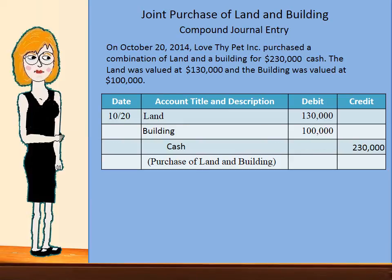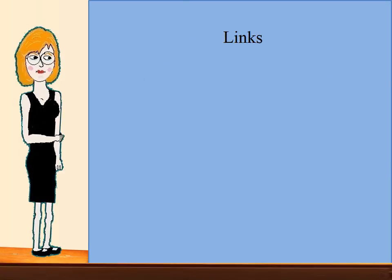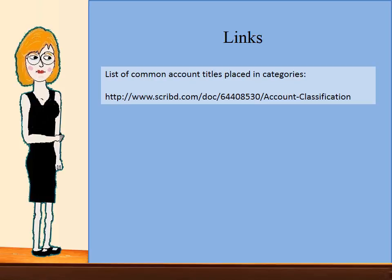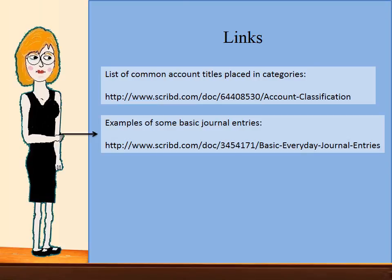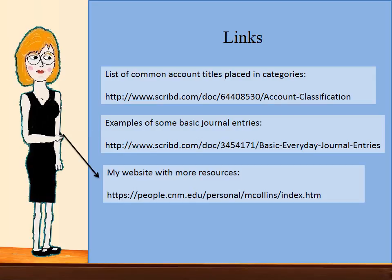This ends our presentation on property, plant, and equipment. Here is a list of common account titles placed in categories; you can look at this anytime you need a refresher. Here is an example of basic journal entries such as the ones we just covered. And here is my website for CNN — only students that go to CNN who have passwords and usernames can access this particular website. I would like to thank you for your interest. Please feel free to check out our other videos, and I will see you next time.